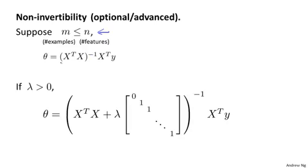If you have fewer examples than features, then this matrix, X transpose X, will be non-invertible. Or singular, or the other term for this is the matrix will be degenerate. And if you implement this in Octave and you use the pinv function to take the pseudo-inverse, it will kind of do the right thing, but it's not clear that it will give you a very good hypothesis, even though numerically the Octave pinv function will give you a result that kind of makes sense.